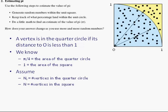Therefore, if we generate a lot of random vertices, and we assume that the number of vertices in the quarter circle is ni and the number of vertices in the square is n.